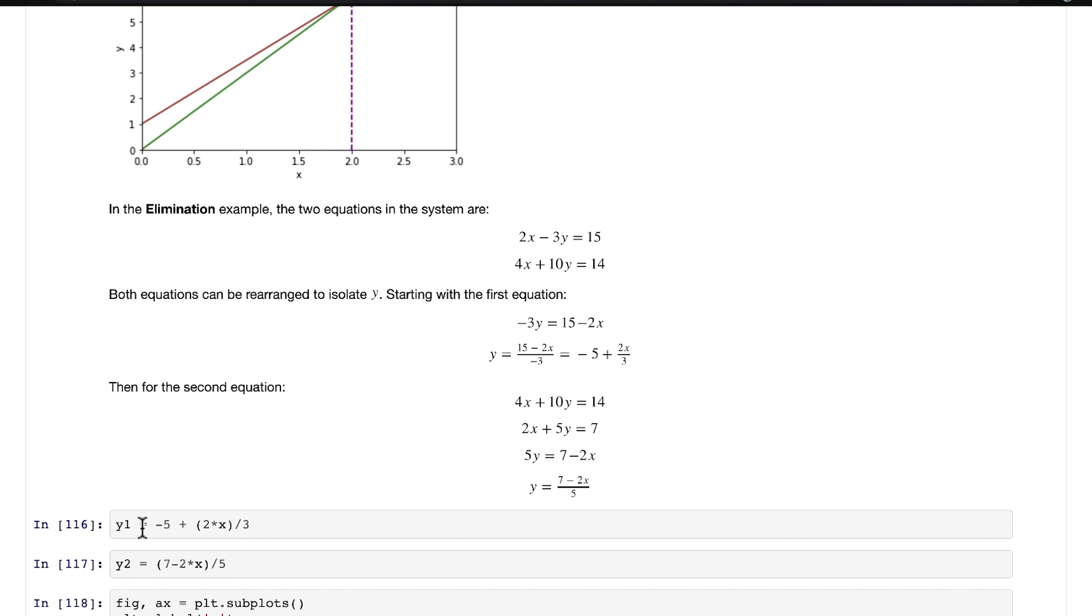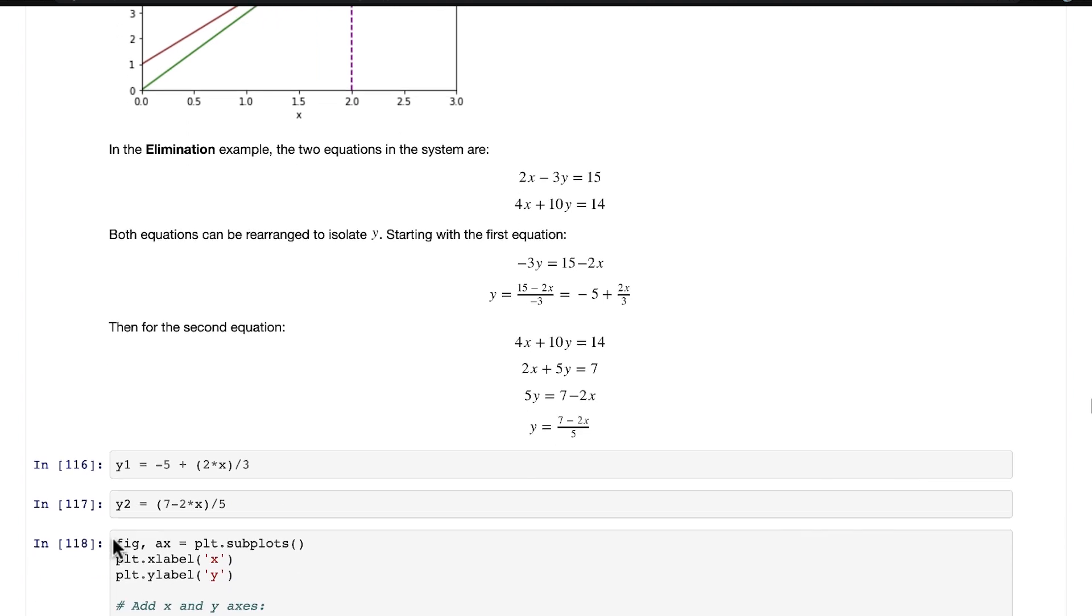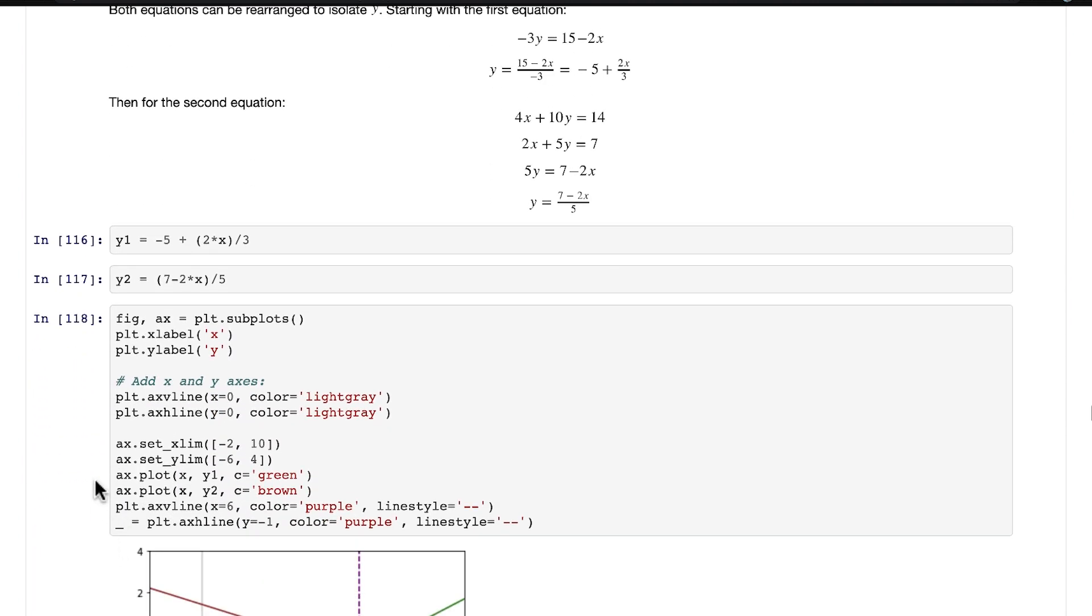So the first equation now in Python code is y = -5 + 2x/3. Here it is in Python code. And then our second equation is y = (7 - 2x)/5. And then we just plot it out.